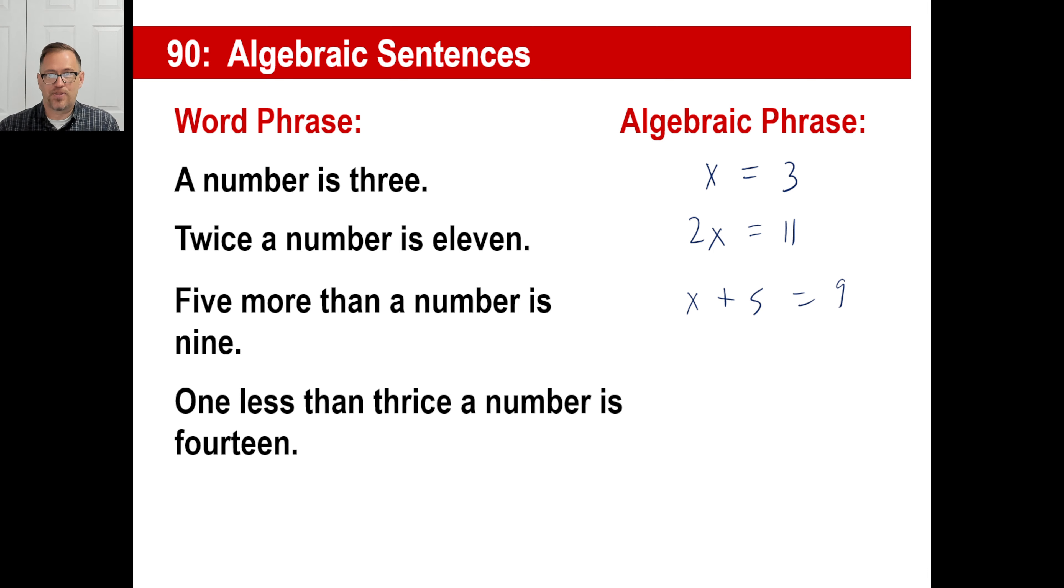One less than thrice a number is 14. What the heck is thrice a number? Three times, of course. All right. I got thrice a number, 3x. One less than that? I'll minus one. Is equals 14. Boom. Can you solve that equation? You darn tootin'.